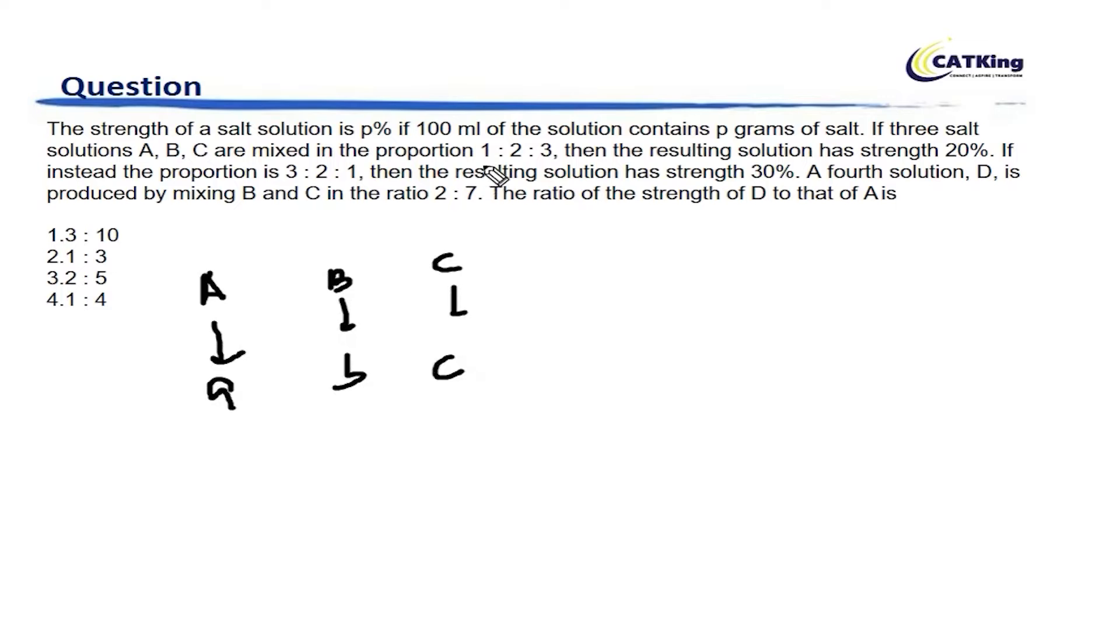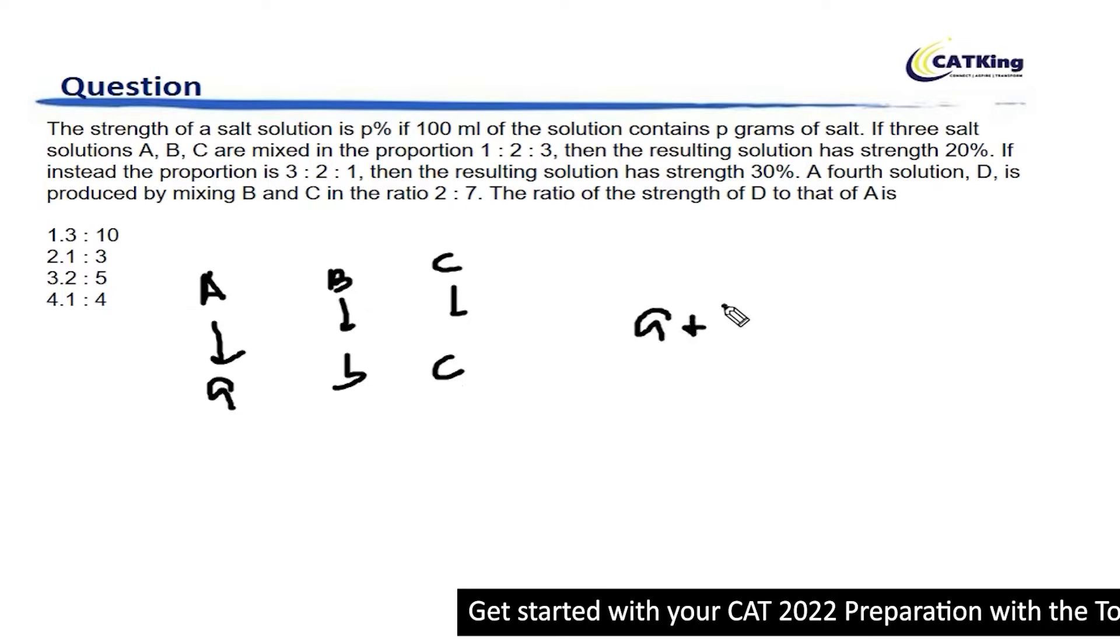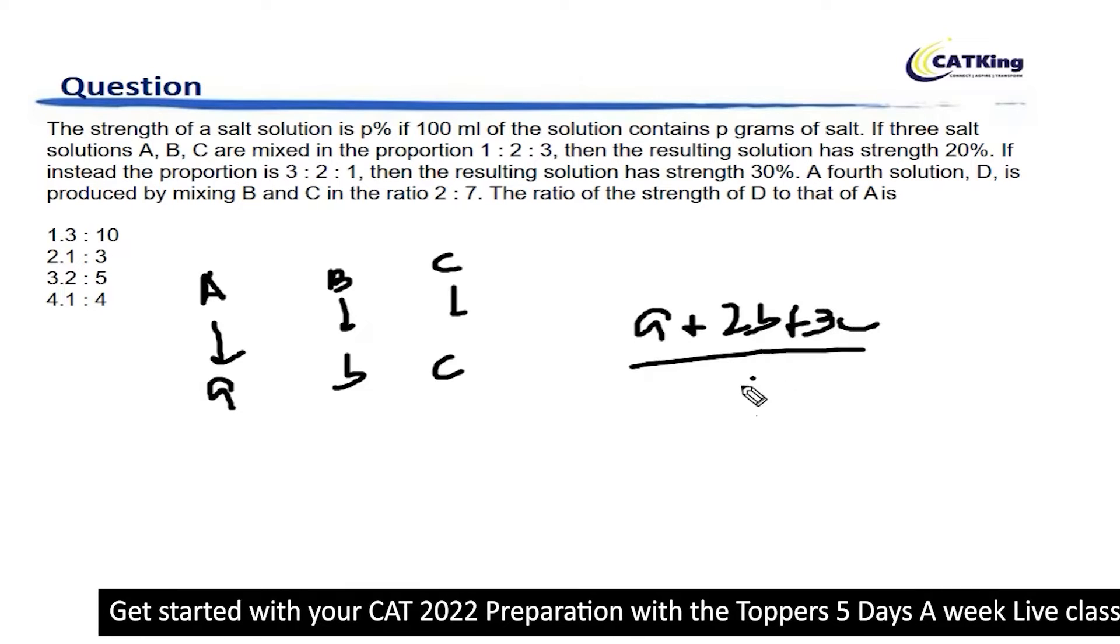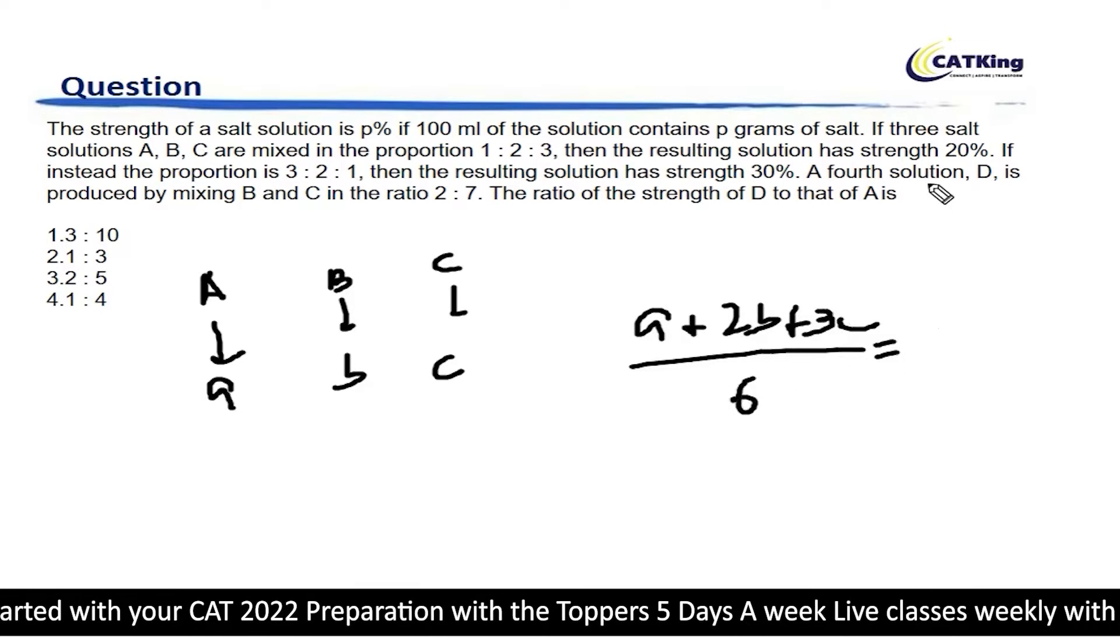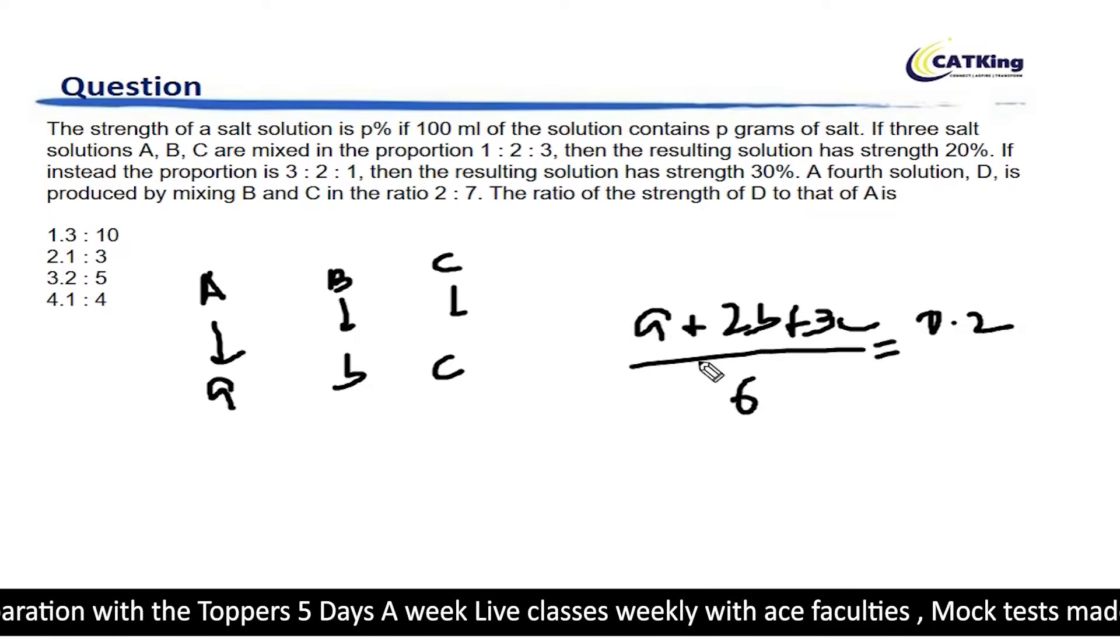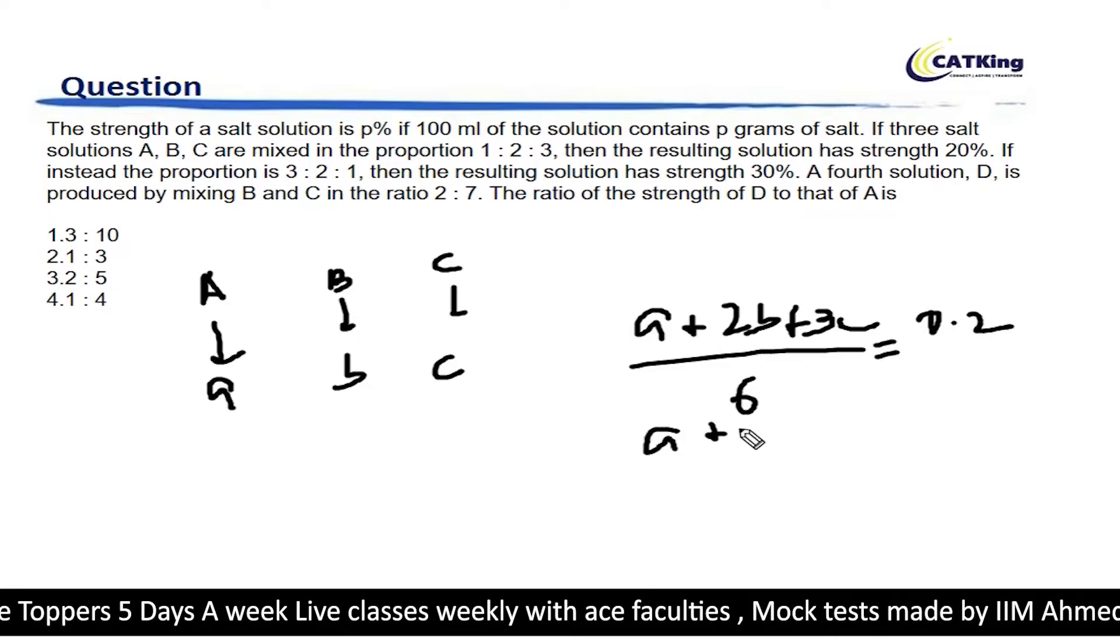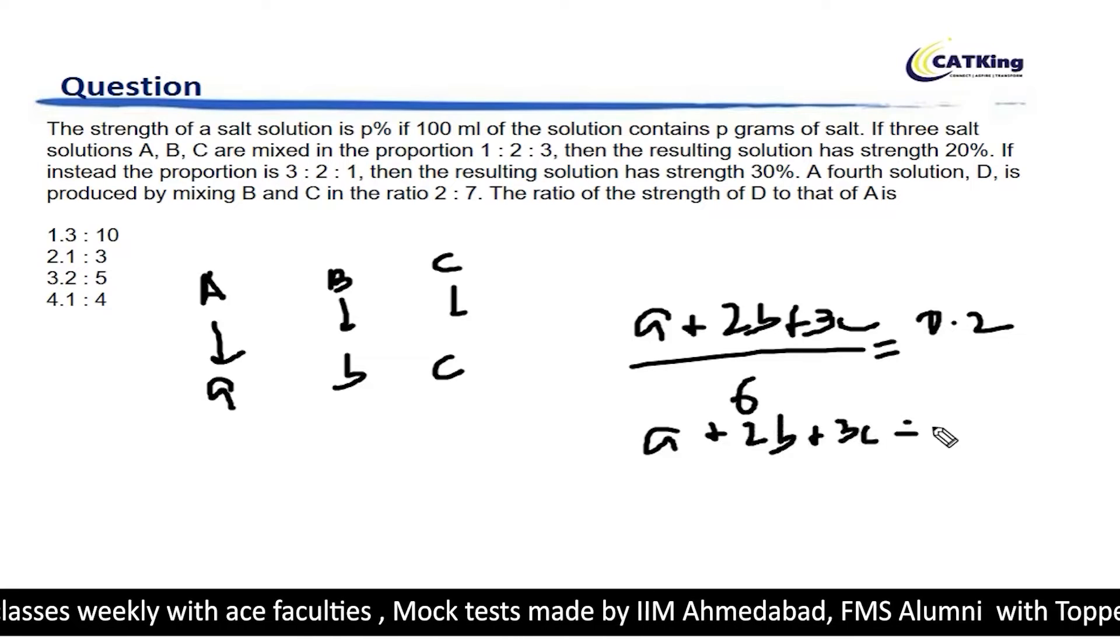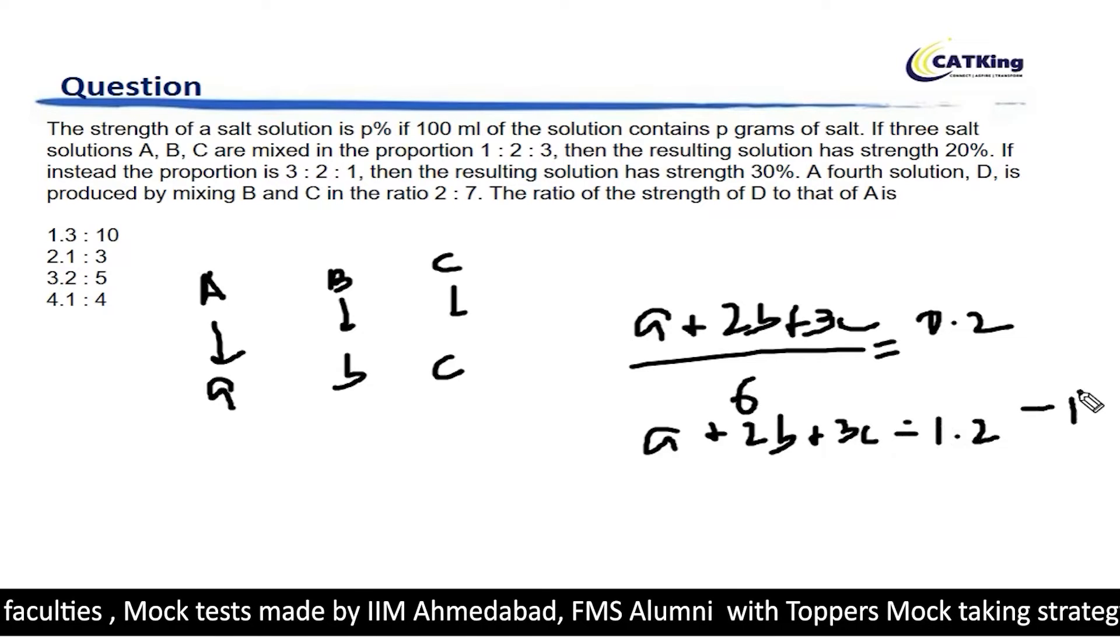They are mixed in the proportion 1 is to 2 is to 3. So if they are mixed in this proportion, what will be the concentration? The concentration will become A plus 2B plus 3C upon 6. That is given as 20 percent, so 0.2. We can say that A plus 2B plus 3C is equal to 1.2. Let's say this is our first equation.